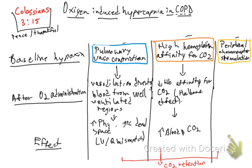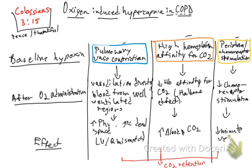Then for peripheral chemoreceptor stimulation: in baseline hypoxia you get peripheral chemoreceptor stimulation, but after oxygen administration, chemoreceptor stimulation decreases. The effect of that is decreased minute ventilation, which also leads to CO2 retention.